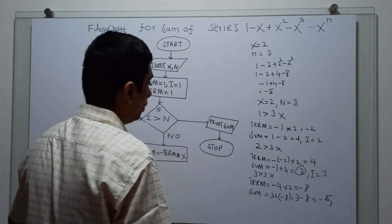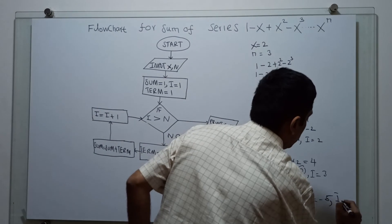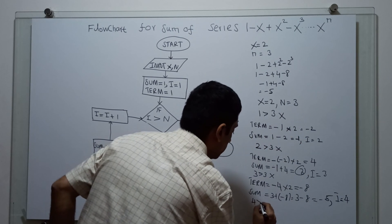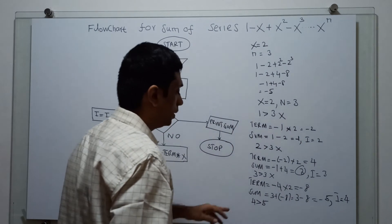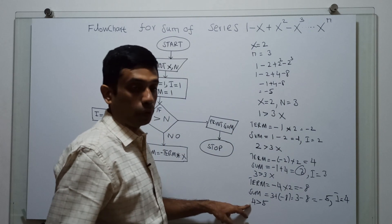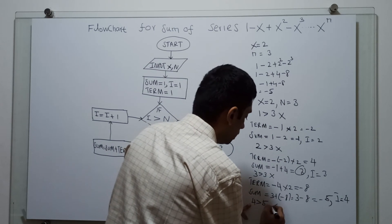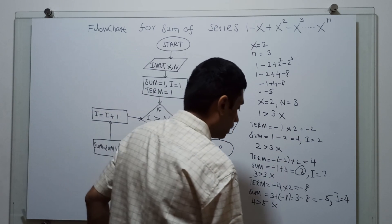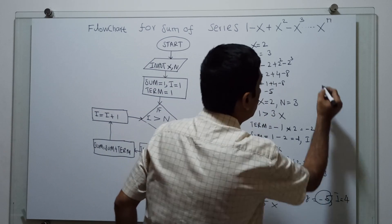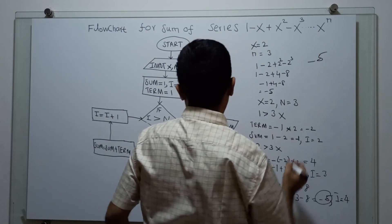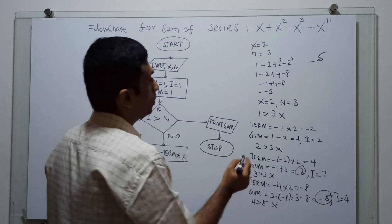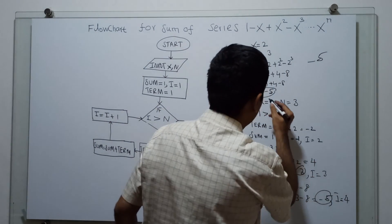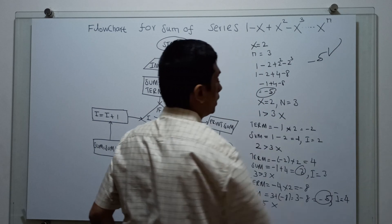Now I am increasing i by 1, so i equals 4. Checking: 4 greater than 3 is true. We come out and print the sum. The sum equals minus 5, so the output is minus 5. As per our manual calculation, minus 5 is correct. Output is minus 5.